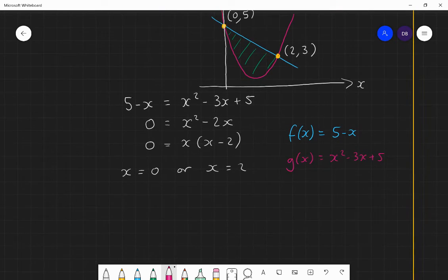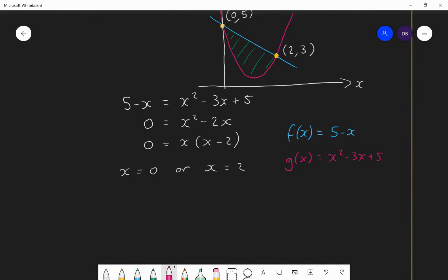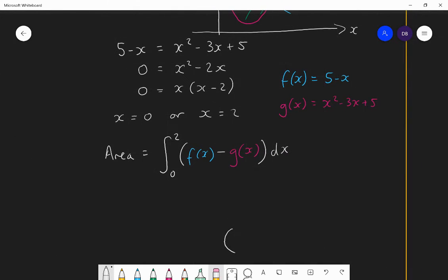So it'd be good to write down an expression for f of x minus g of x as my next step. Because I want the area, the area that I want is going to equal the integral between 0 and 2, because those are my limits in the x direction, of f of x minus g of x. So it'd be good if I had a simplified version of what f of x minus g of x was. So let's do that.